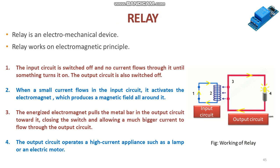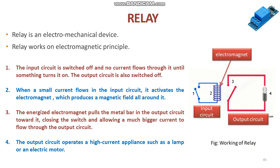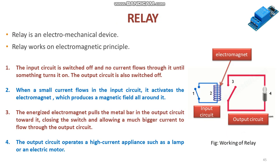When a small current flows in the input circuit, it activates the electromagnet which produces a magnetic field all around it. The energized electromagnet pulls the metal bar in the output circuit towards it, closing the switch and allowing a much bigger current to flow through the output circuit. The output circuit then operates a high current appliance such as a lamp or electric motor.